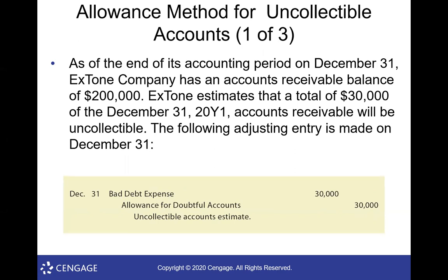The problem with the direct write-off method is that often a person borrowed money in a previous period and you're writing it off in this period, so you have an expense that doesn't match the initial transaction. This creates confusion from an accrual accounting standpoint. Like adjusting entries, the solution is more complex — people outside of accounting are always surprised by these things.